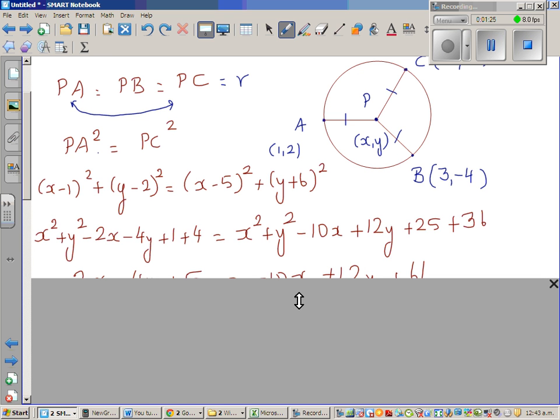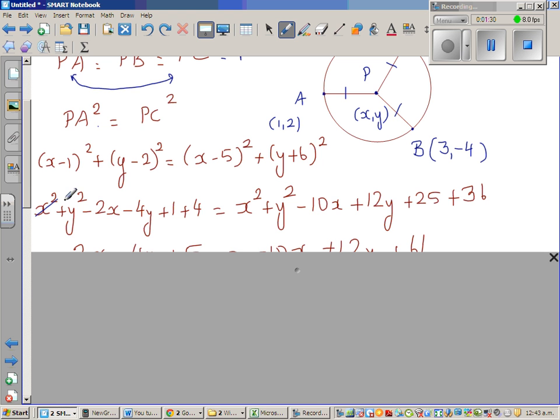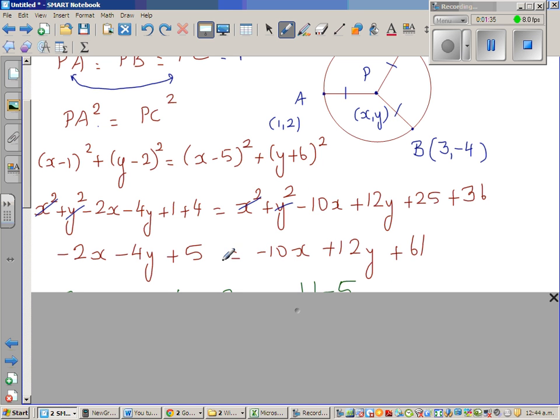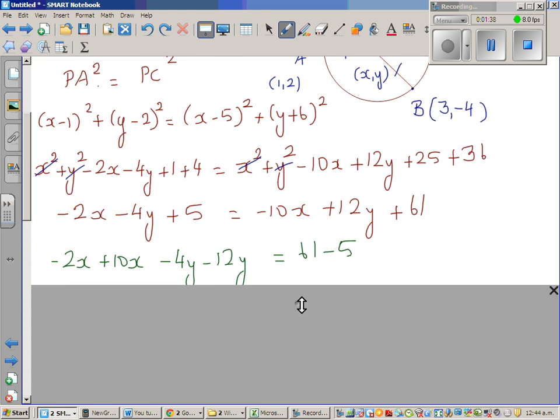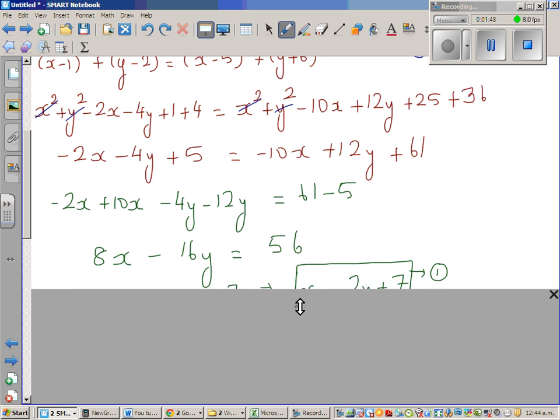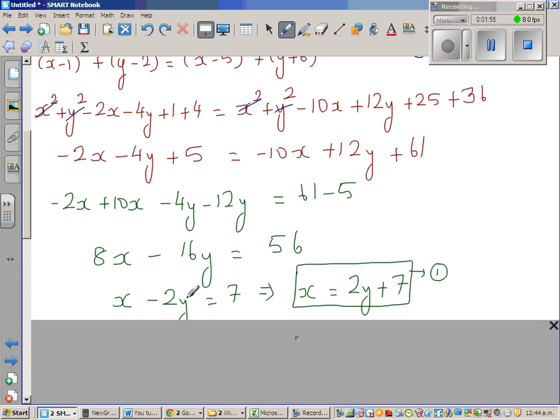Now squaring both sides, you get this. I'm not going over that; you can see that yourself. x² and y² will get cancelled, so what remains is this. Then making the equation... Adding 10x on both sides simplifies to 8x - 16y = 56. Dividing all by 8, you get x - 2y = 7, and if you make x the subject, you get x = 2y + 7.